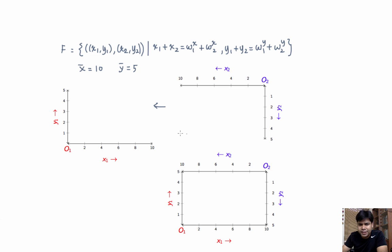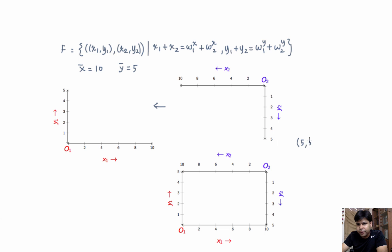This is known as the Edgeworth box. Now let us check how this Edgeworth box represents the set of all feasible allocations. Consider any allocation — any division of the total endowment — such as individual 1 consuming 5 units of x and 5 units of y, and individual 2 consuming whatever remains, which is 5 units of x and 0 units of y. So where is this allocation located in the Edgeworth box?